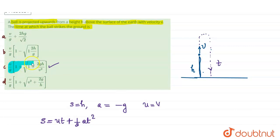Our correct answer is C: v/g times (1 plus square root of 1 plus 2gh/v squared).